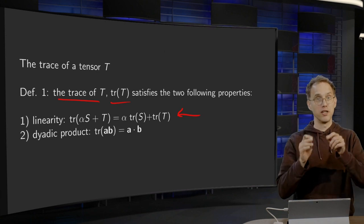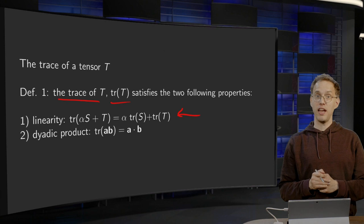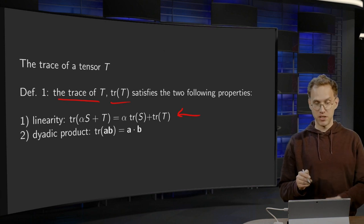Linearity: so if you have αS + T, some tensor, then the trace should be linear. So it should be equal to α·tr(S) + tr(T).